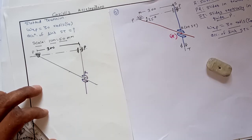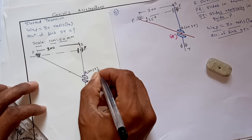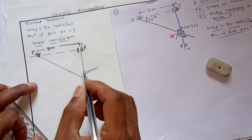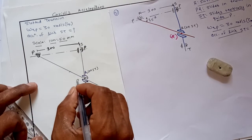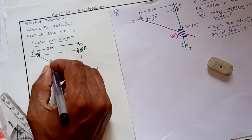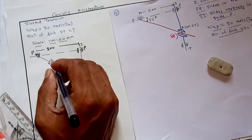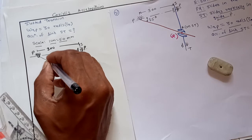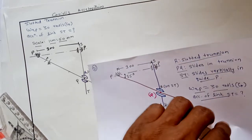R is on link ST — this is vertical link ST, so R is on ST. This is point P, and just below point R lies point Q on this rotating link. This link is rotating in counterclockwise direction. This completes the configuration diagram. Now after the configuration diagram we will proceed to draw the velocity polygon.